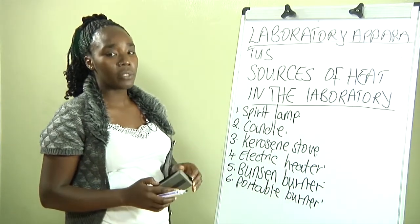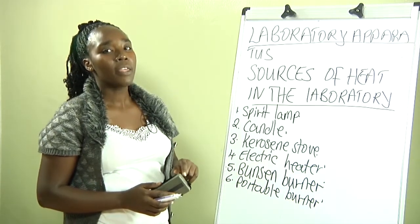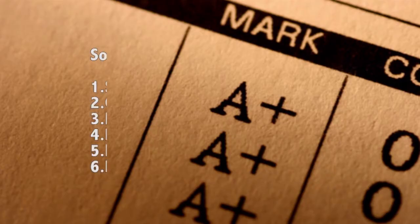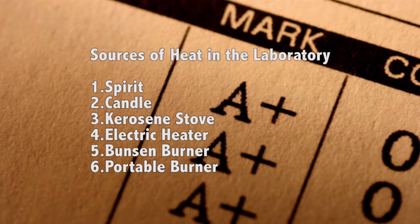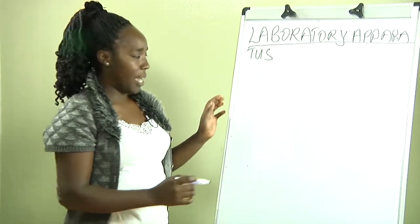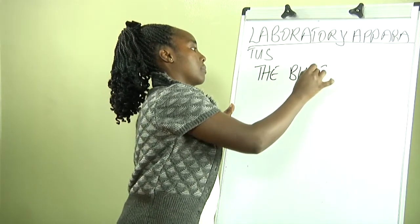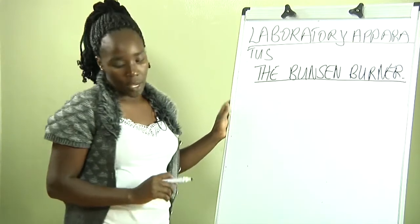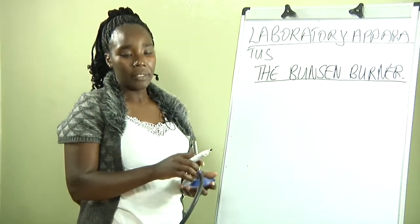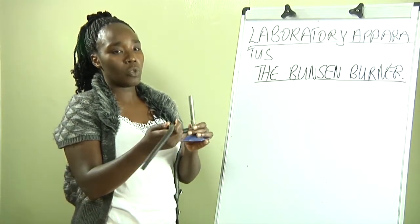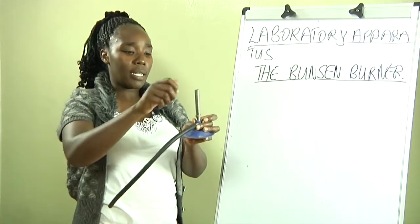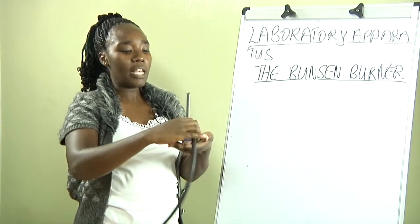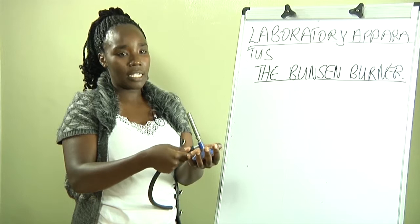If we are not in a position to have the large gas cylinders used together with the Bunsen burner, then we can use a smaller one that can be moved from one point to another, called a portable burner. Our main interest in heating sources in our laboratory will mainly be the Bunsen burner. I have an example of one, and it has various parts which I will first of all name.